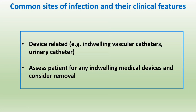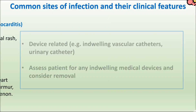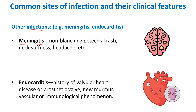Other common sites include device-related infections — if a patient has a vascular catheter like a central venous line or urinary catheter for a prolonged period, assess for indwelling devices and consider removal or replacement. Other infections like meningitis or endocarditis have their own features: in meningitis, the patient may have headache, neck stiffness, and non-blanching petechial rash; in endocarditis, history of valvular heart disease or prosthetic valve, presenting with fever, new murmur, and immunological phenomena.